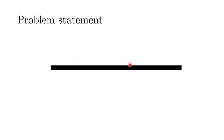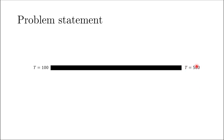Let's say we have a rod of a certain length. We are given the boundary conditions and are interested in the diffusion of temperature. The left boundary is maintained at 100 and the right boundary at 500 — you can think of these as Kelvin. The question is how the temperature varies within the domain if the rod is 0.5 meters long. We want to find the temperature distribution within that rod.